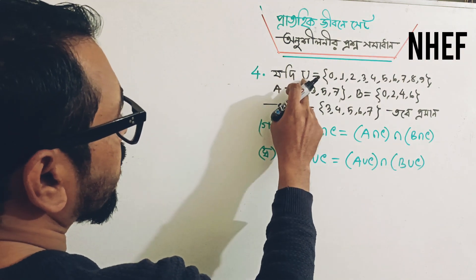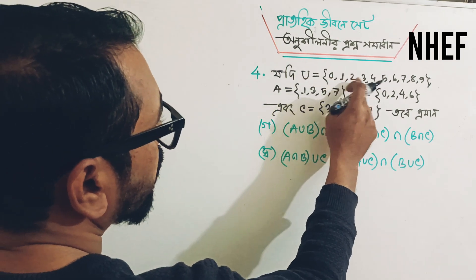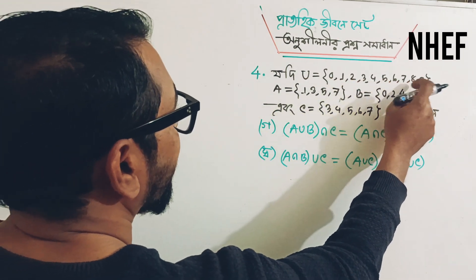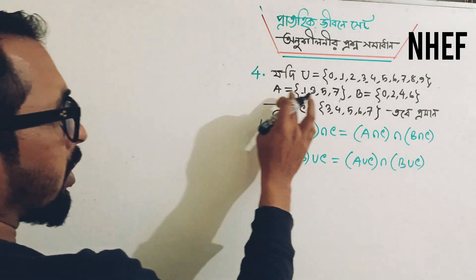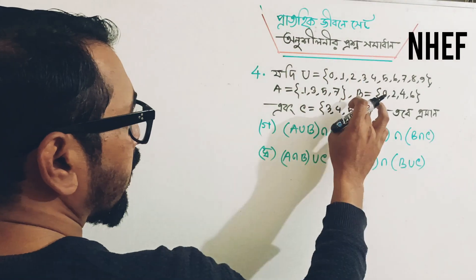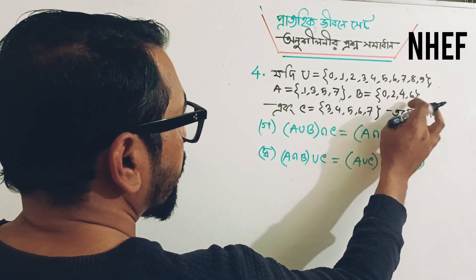If the universal set is equal to {0, 1, 2, 3, 4, 5, 6, 7, 8, 9}, then S set is equal to {1, 3, 5, 7}, and B set is equal to {0, 2, 4, 6}.